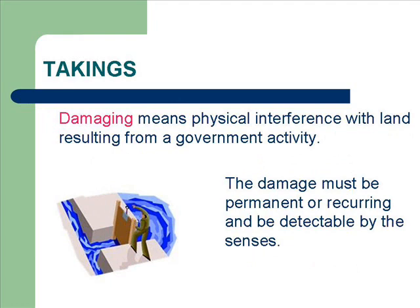The Utah Constitution expressly requires compensation if property is damaged for a public use. Damaging is physical interference with property caused by a government activity or facility. The interference must be permanent or recurring and must be detectable by the senses.